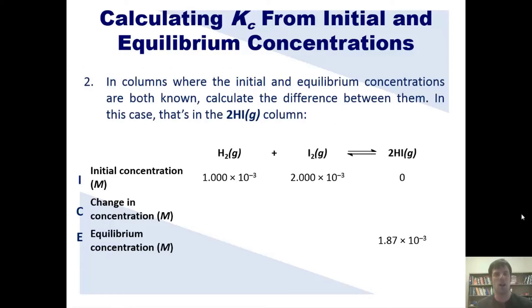Now that we have this table laid out, we'll go on to step number two, which is in columns where the initial and equilibrium concentrations are both known, calculate the difference between them. In this case, that's in this HI or hydroiodic acid column. So the initial concentration is zero. The final concentration is this number. So what's the change? Well, it's obviously this number minus zero. So it's that. Hopefully that ain't too bad.